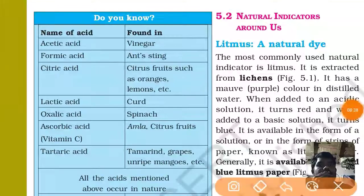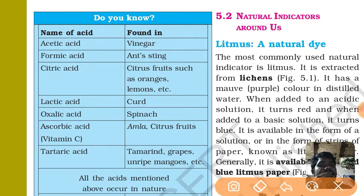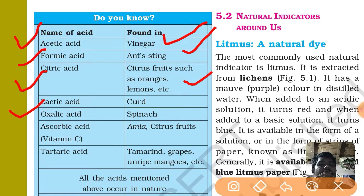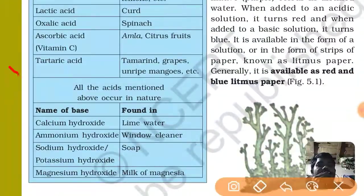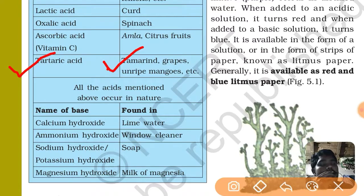This point is very important. There are some acids found in natural sources: acetic acid is found in vinegar; formic acid is found in ant sting; citric acid is found in citrus fruits such as orange and lemon; lactic acid in curd; oxalic acid in spinach; ascorbic acid in amla and citrus fruits; tartaric acid in tamarind, grapes, and unripe mangoes. You must remember these sources.